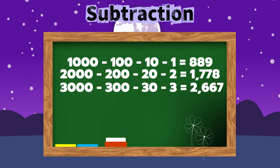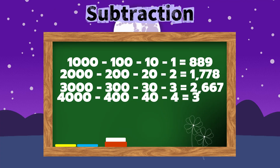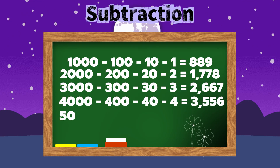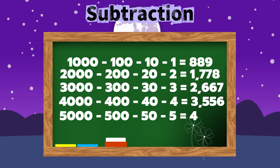4,000 minus 400 minus 40 minus 4 is equals to 3,556. 5,000 minus 500 minus 50 minus 5 is equals to 4,445.